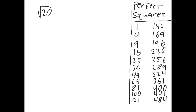We start with the first problem: square root of 20. We want to simplify that. We start with 4 — 20 divided by 4 is 5, so that works. We take out the square root of 4, and what's left over is 20 divided by 4, which is 5. So we've got square root of 4 times the square root of 5. The square root of 4 is 2, and the square root of 5 stays as is. So the answer is 2 square roots of 5.